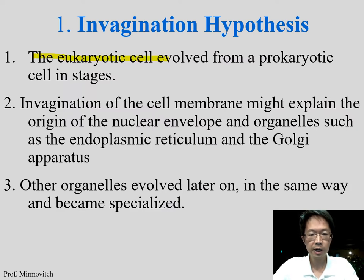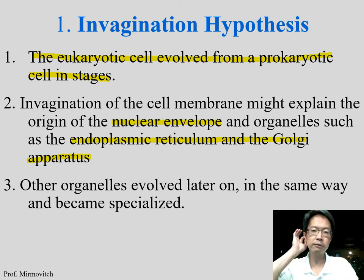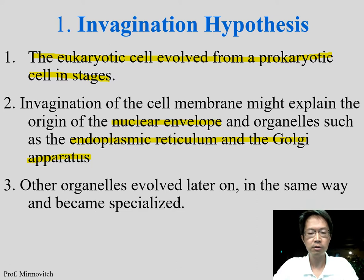Eukaryotic cells evolved from prokaryotic cells, which are a lot simpler. The invagination of the cell membrane explains the nuclear envelope and organelles such as the endoplasmic reticulum and Golgi apparatus. Whether rough ER or smooth ER, they have multiple vesicles, as does the Golgi apparatus — all originated from the cell membrane. Other organelles evolved later and became specialized, such as lysosomes and peroxisomes.